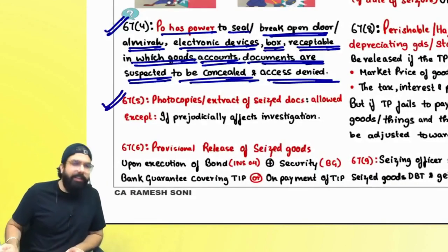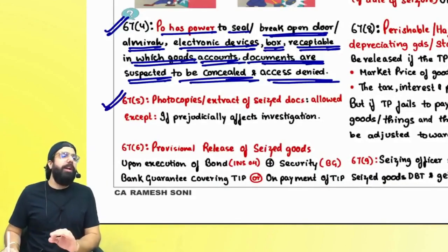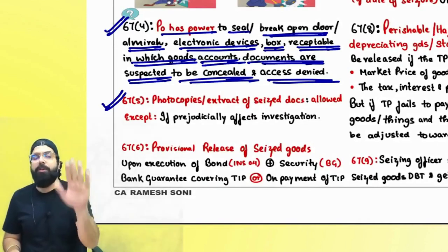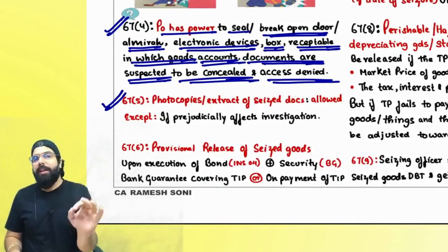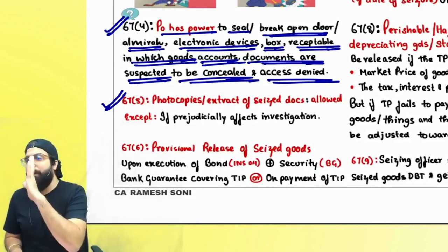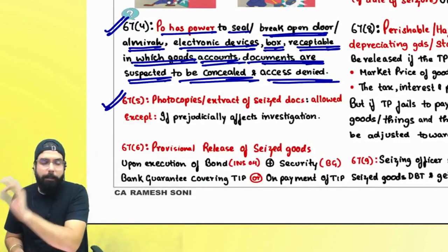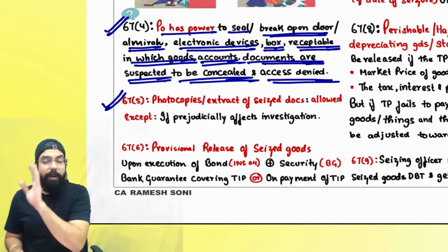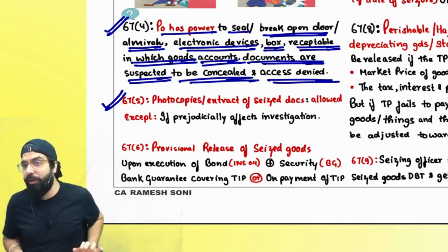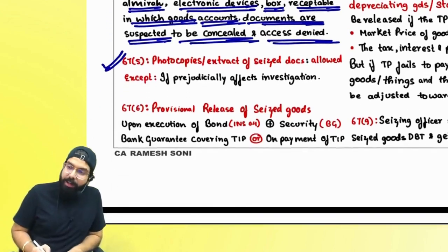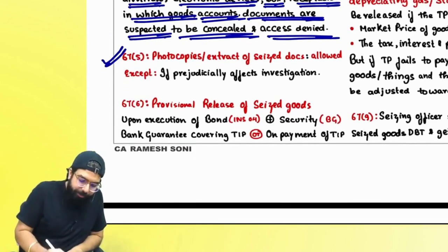Section 67(5) — if you want photocopies or extracts, the officer will allow it to you. However, if the officer feels it is prejudicial to revenue interest, then he will not allow you.